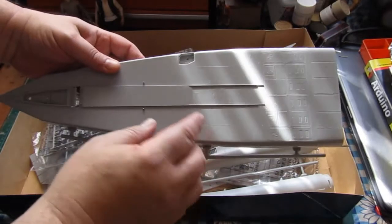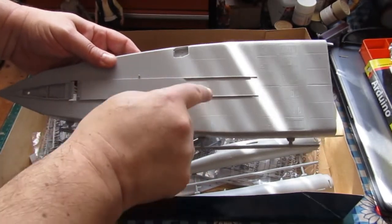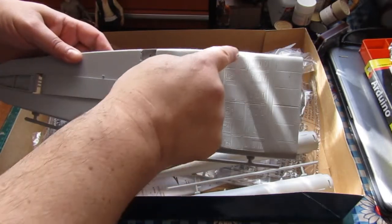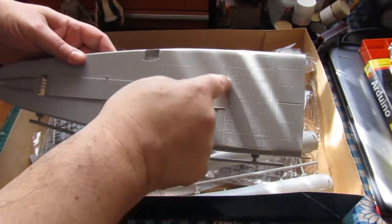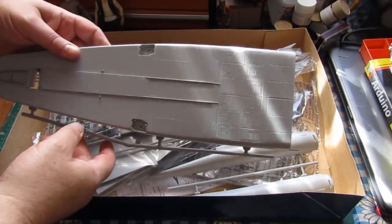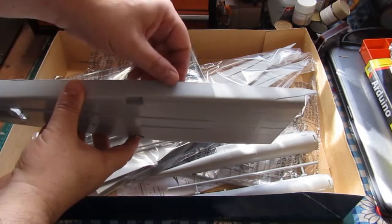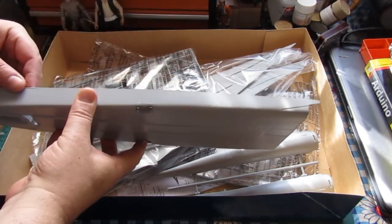Unfortunately, the majority of the aircraft surface featured raised panel lines, which would need to be re-scribed later. This was quite a daunting thought given the size of the aircraft. Luckily, some of the larger areas had recessed panel lines which didn't need any scribing.